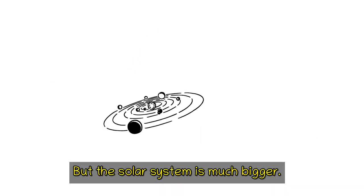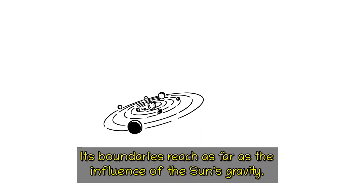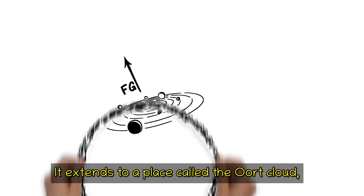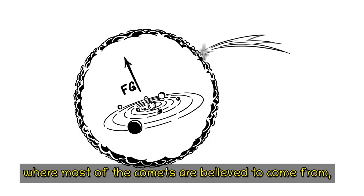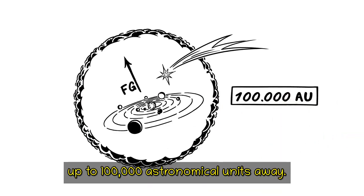But the solar system is much bigger. Its boundaries reach as far as the influence of the Sun's gravity. It extends to a place called the Oort Cloud, where most of the comets are believed to come from, up to 100,000 astronomical units away.